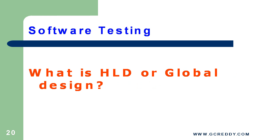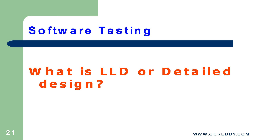What is HLD or Global Design? High Level Design gives the overall system design in terms of functional architecture and database design. It designs the overall architecture of the entire system from the main module to all sub-modules. What is LLD or Detailed Design? Low Level Design breaks down the view of the application developed during high level design into modules and programs. Logic design is done for every program and documented as program specifications. For every program, a unit test plan is created.